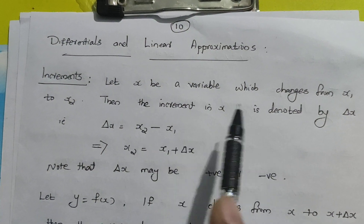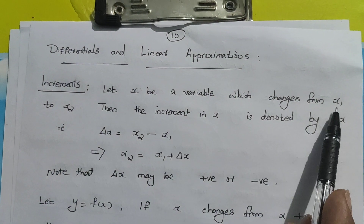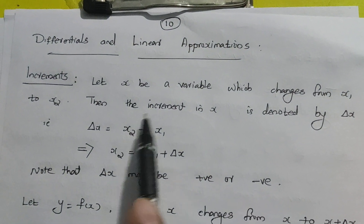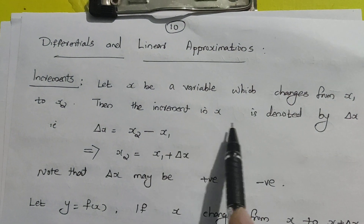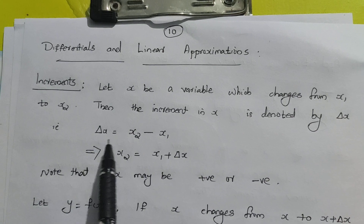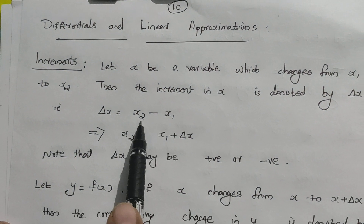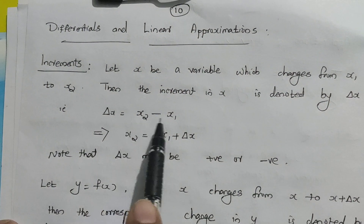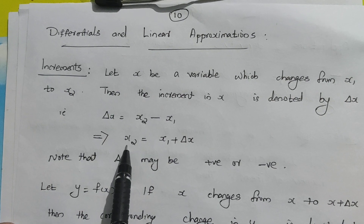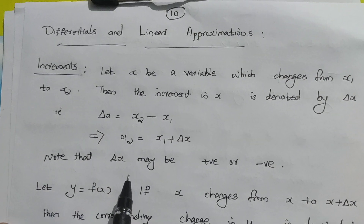X is the independent variable. X1 is one point and X2 is another point. The increment in X is denoted by delta X, which is equal to X2 minus X1. From this, we can write X2 equal to X1 plus delta X.